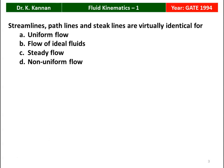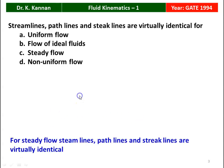Streamline, path line, and streak lines are virtually identical for: uniform flow, flow of ideal fluid, steady flow, and non-uniform flow. The correct option is steady flow. For steady flow, streamline, path line, and streak lines are virtually identical. So the answer to this question is steady flow.